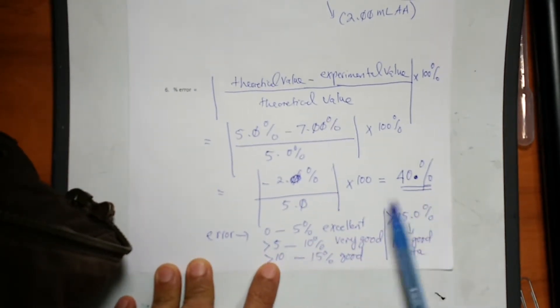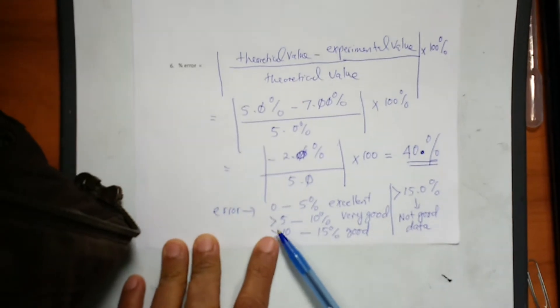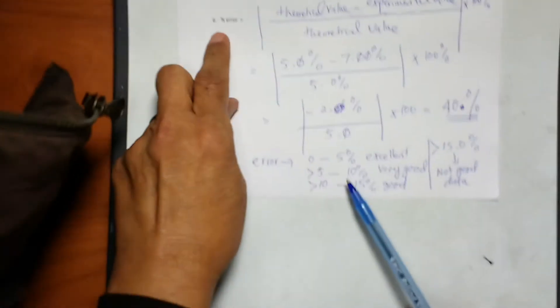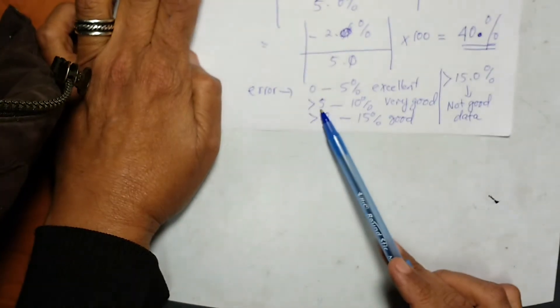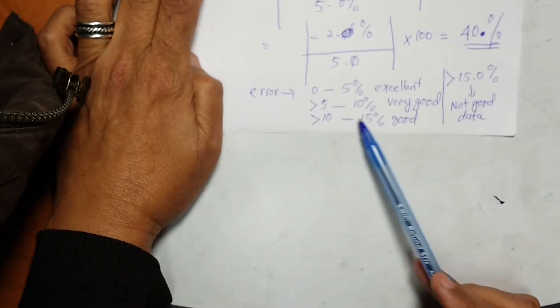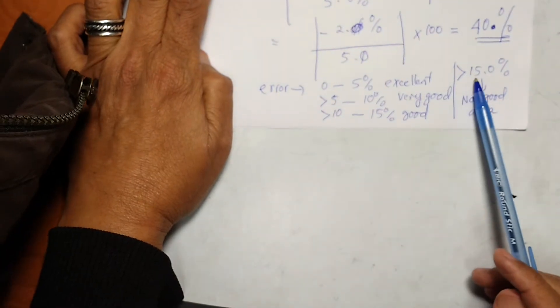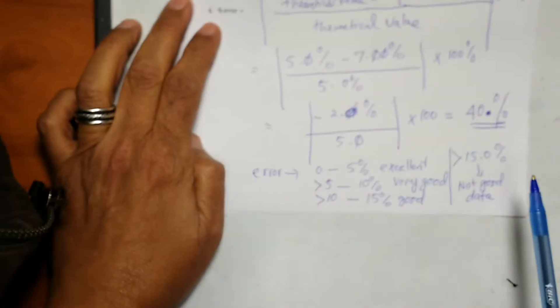This is very high. And the best, look at the best results here. 0.5, 0.5% is 0 to 5, is excellent. Greater than 5 to 10, very good. 10 to 15, good. 10 to 15, greater than 15% is not good data.